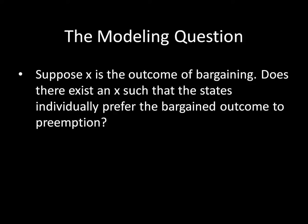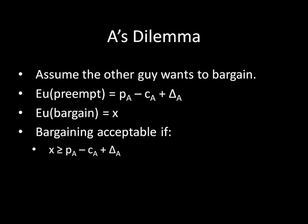The modeling question is: suppose X is the outcome of bargaining — state A receives X of the good and state B receives 1 minus X. Does there exist an X such that both states individually prefer the bargained outcome to preemption? Let's look from A's perspective. Assume B is going to bargain. If A preempts, its expected utility is PA plus delta A minus CA — the probability of victory under normal circumstances plus the first strike advantage minus the costs of fighting. That's what A receives if it launches a surprise attack.